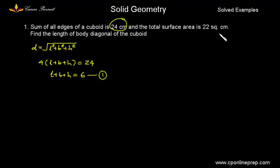Now, the second information given to us is that the total surface area is 22 cm square which by the formula is 2 times L into B plus B into H plus L into H which is equal to 22. Let this be equation 2.